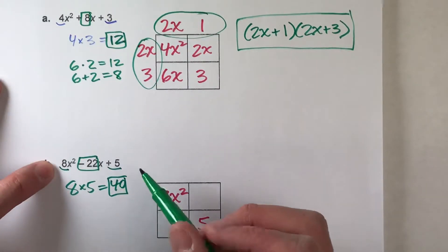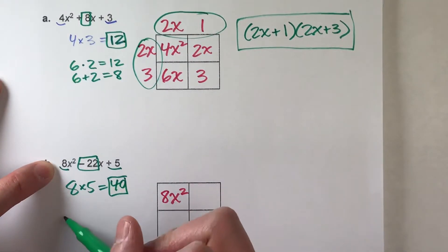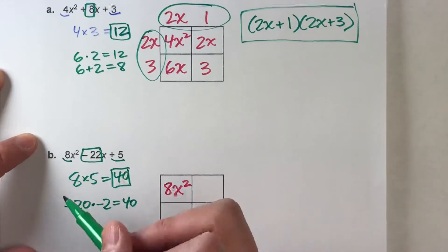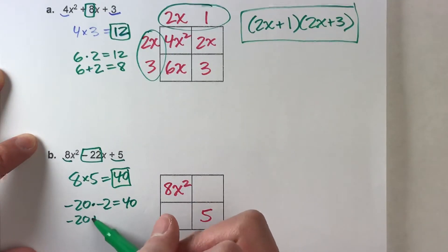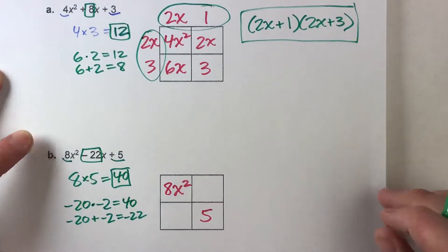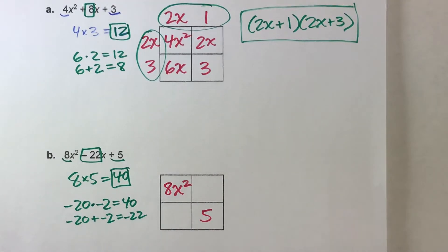But, if you start listing your factors of 40, you'll realize that negative 20 times negative 2 equals positive 40, and negative 20 plus negative 2 equals negative 22, which is what we want. So we just found the numbers we're going to use, negative 20 and negative 2.